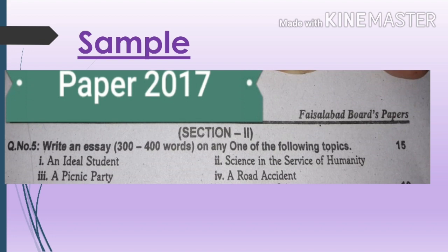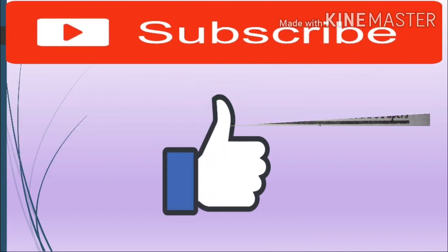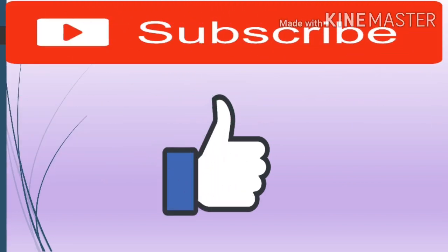Here is a sample. Question number 5: write an essay of 300 to 400 words on any one of the following topics. This question bears 15 marks. There are four essay options: an ideal student, science in the service of humanity, a picnic party, and a road accident. Students have to select one. Don't forget to subscribe and like the channel.